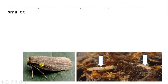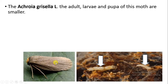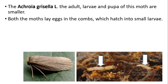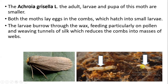The next moth is Achroia grisella. The adult produces eggs, and there is a larval stage and a pupal stage. They are smaller than Galleria mellonella. Both Galleria mellonella and Achroia grisella produce eggs on the comb, and the eggs give rise to larvae. The larvae are small; they burrow through the wax, feed on pollen, and produce silk in the form of tunnels.